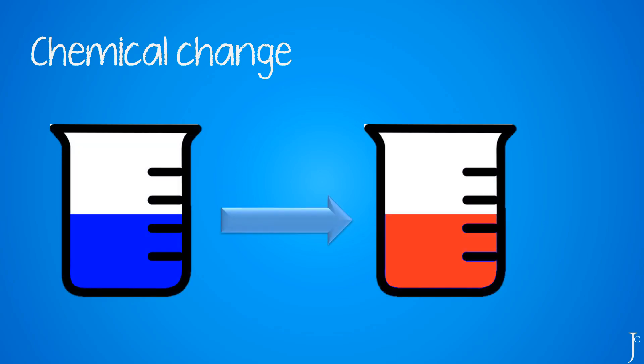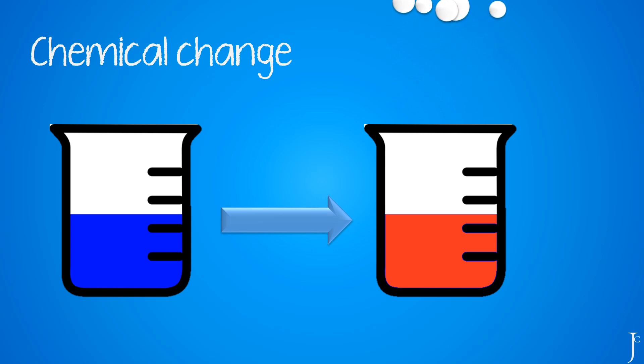A chemical change is different. A chemical change occurs because a new substance has been created through a chemical reaction. The things you might observe include a color change, a gas being produced, a precipitate being produced (which is a solid), or energy being released — in the form of thermal energy (heat), light, or sound.